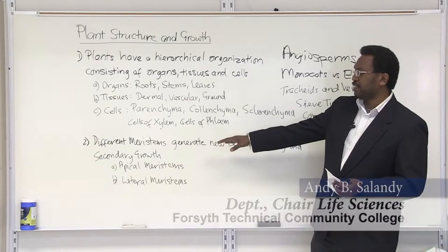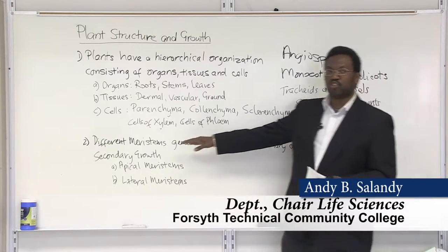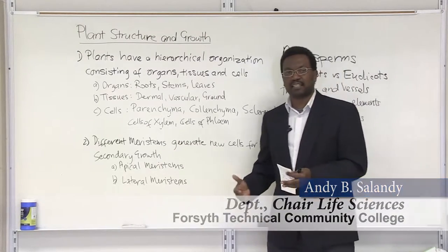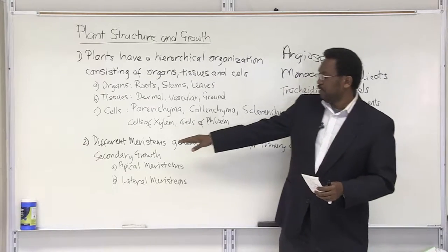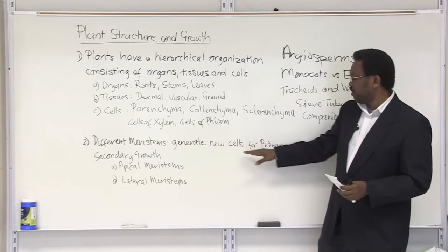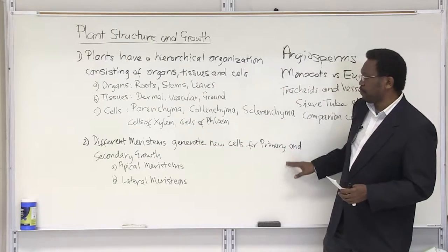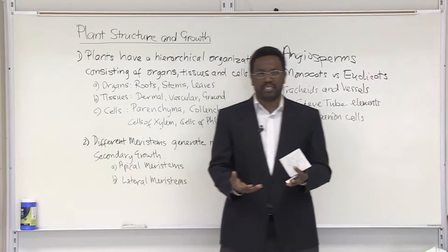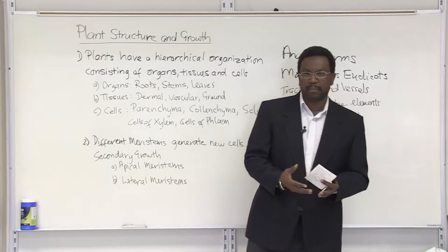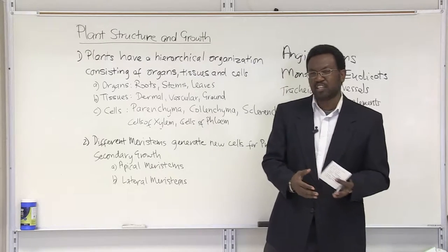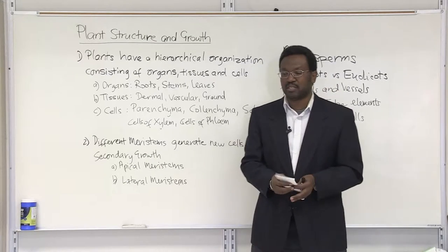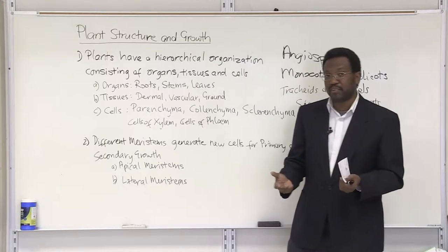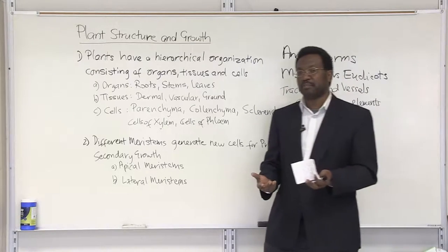As we look at the growth aspect of plants as it ties back to the structure, different meristems generate cells for primary and secondary growth. These are specialized cells involved in cell division, called meristems or meristematic tissue.